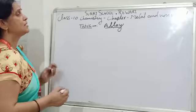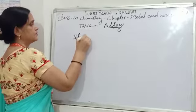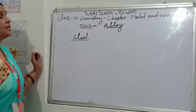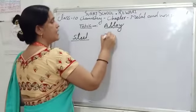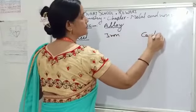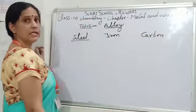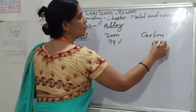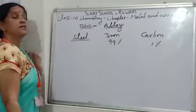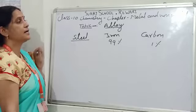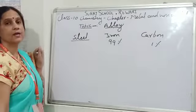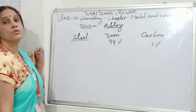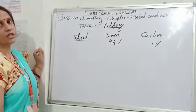Some alloys are like steel. The constituent elements of steel are iron and carbon. In steel, iron is present at 99% and carbon at 1%. So if we mix iron and carbon in the ratio of 99 to 1, we get an alloy called steel. Steel is used to make vehicles, ships, etc.